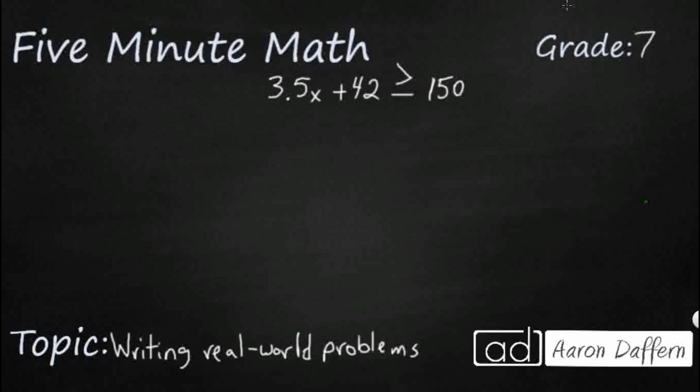So we have a basic inequality here: 3.5x plus 42 is greater than or equal to 150. Now how can we create a new story problem from just this basic inequality? Well let's think about basic things we would need for our inequality story problem.